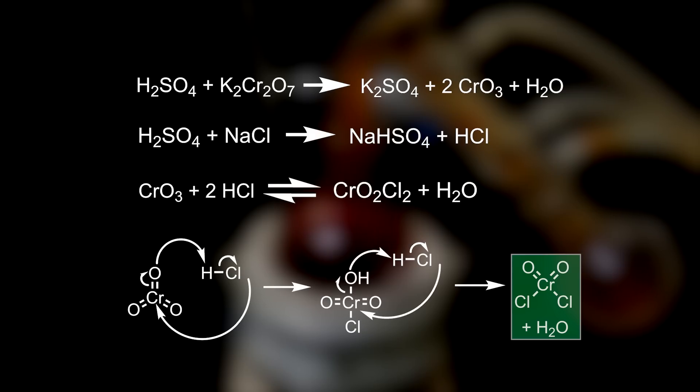The reverse reaction can also take place, where chromochloride reacts with water, but it is mostly sequestered by the concentrated sulfuric acid, which prevents the water from reacting, as well as distilling over.